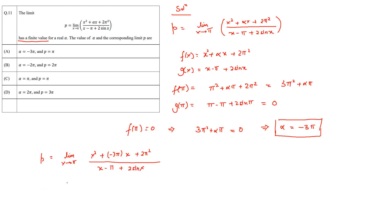Now applying L'Hôpital's rule, we can say that this becomes, just differentiating numerator as well as denominator, to be (2x minus 3 pi) over (1 plus 2 cos x) with limit x tending to pi.